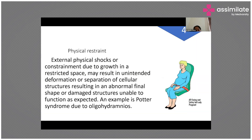Coming to physical restraint: external physical shocks or constriction due to growth in a restricted space may result in unintended deformation or separation of cellular structures, resulting in an abnormal final shape or structures unable to function as expected. An example is Potter syndrome due to oligohydramnios.